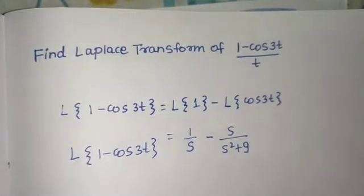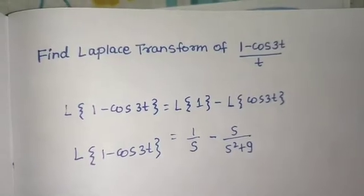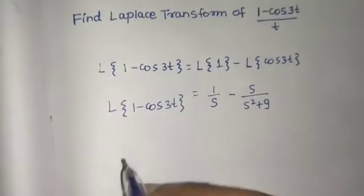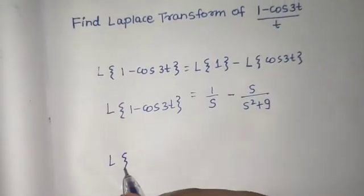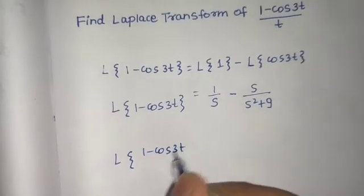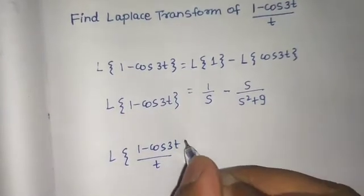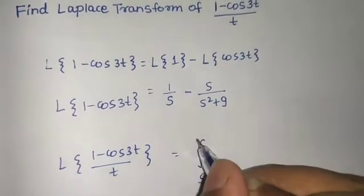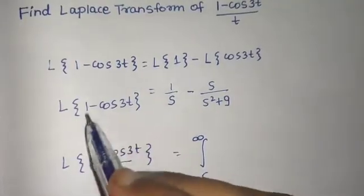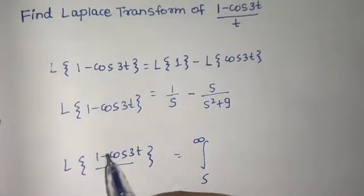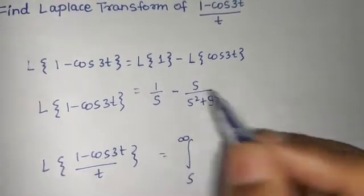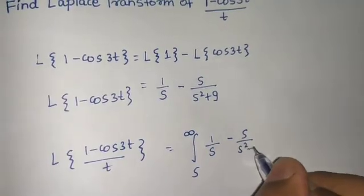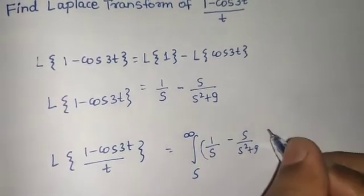So we will use the division by t property, which says that if we are dividing by t once, we have to integrate from s to infinity of whatever is the Laplace transform of the numerator portion. So the numerator's Laplace is this, and we will integrate it with respect to s.